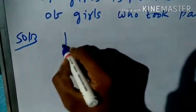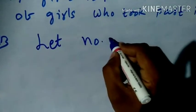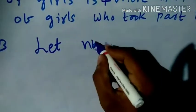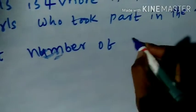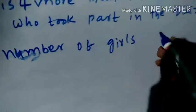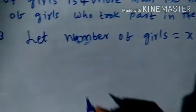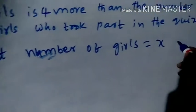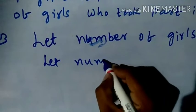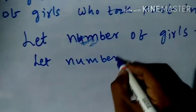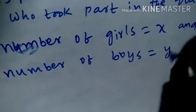So let the number of girls be equal to x, and let the number of boys be equal to y.